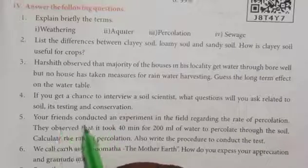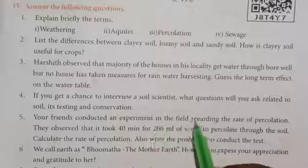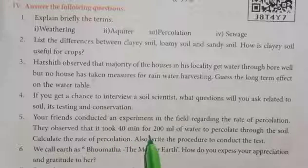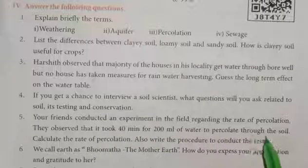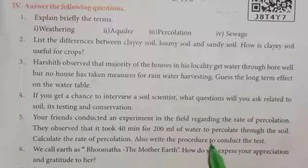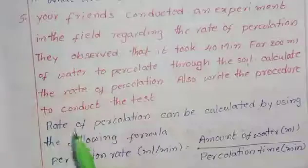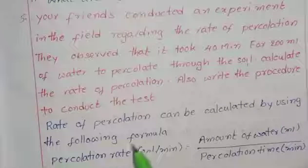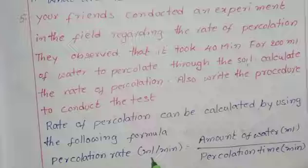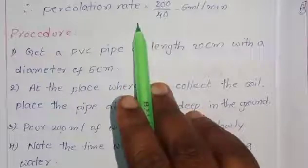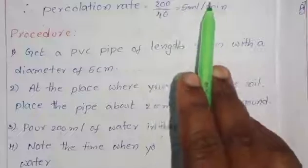Your friends conducted an experiment regarding the rate of percolation. They observed that it took 40 minutes for 200 ml of water to percolate through the soil. Calculate the rate of percolation. Percolation rate = amount of water in mL ÷ percolation time in minutes. Percolation rate = 200 ÷ 40 = 5 mL per minute.